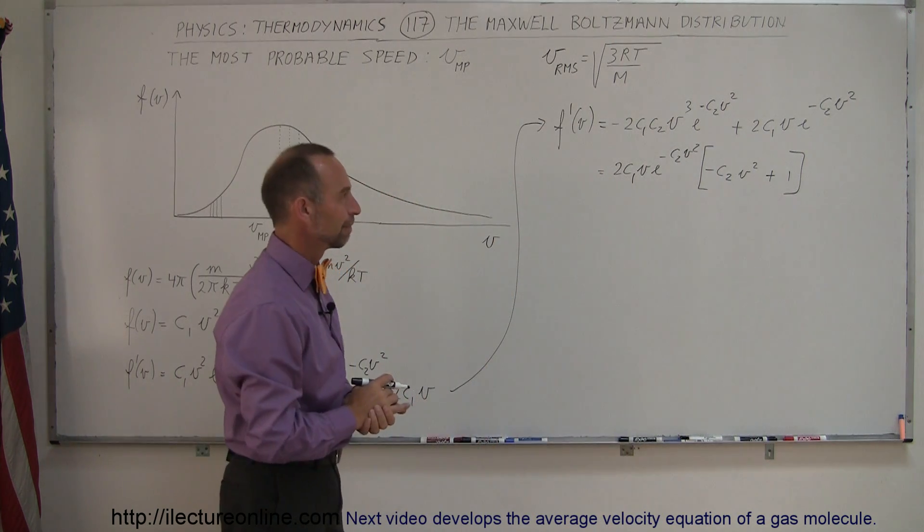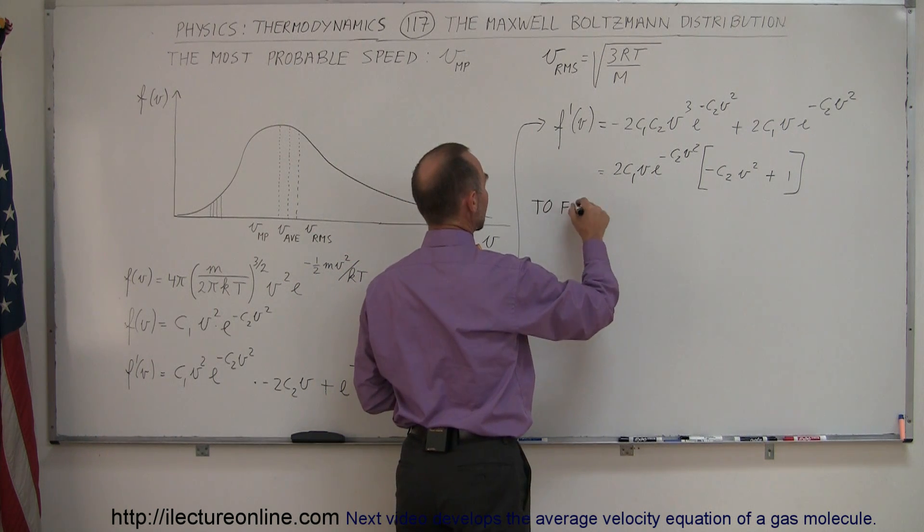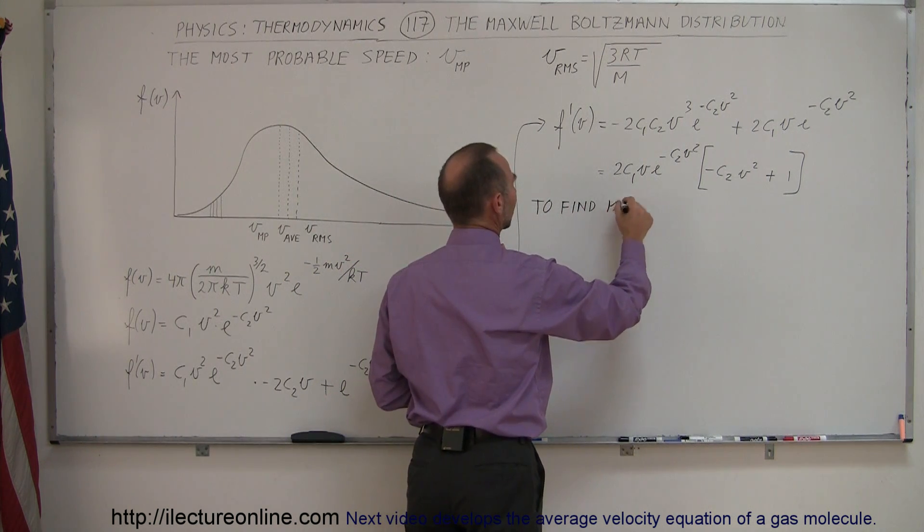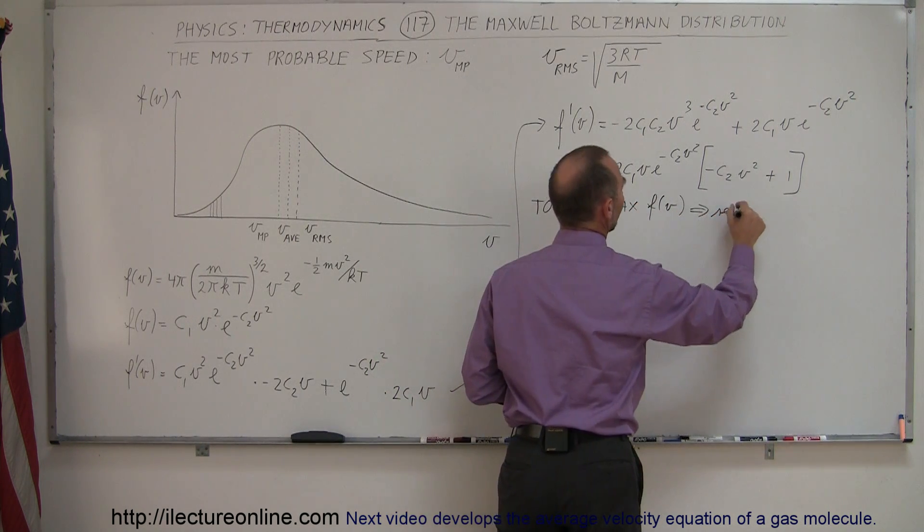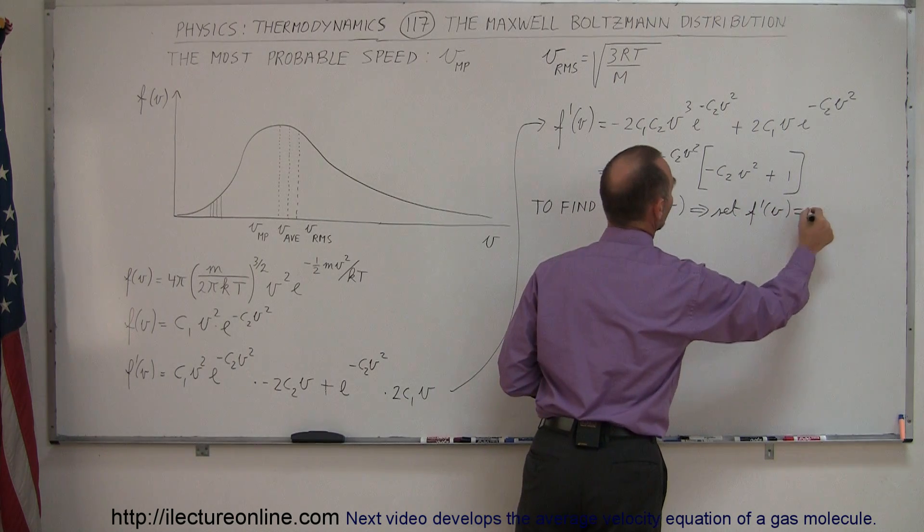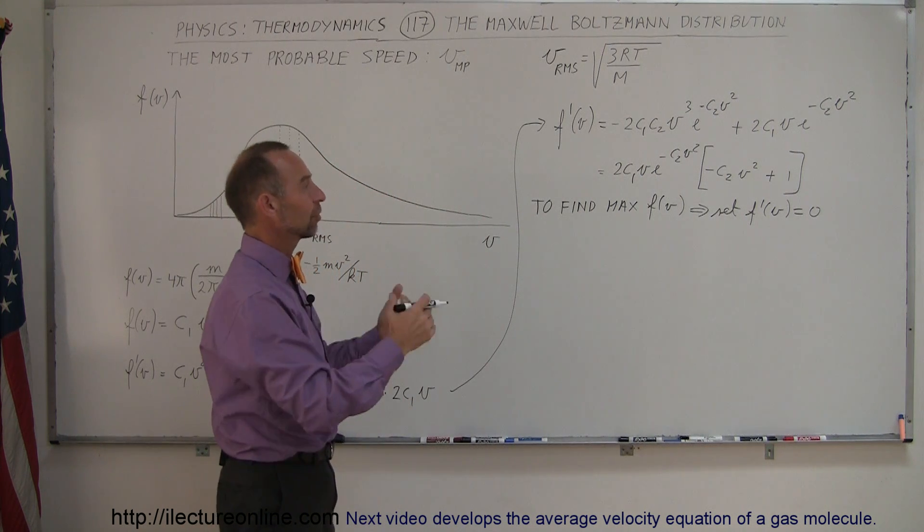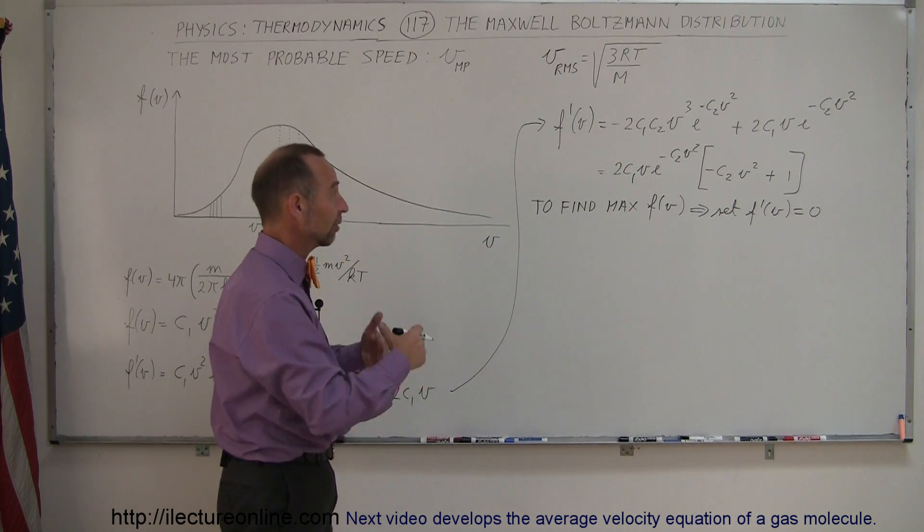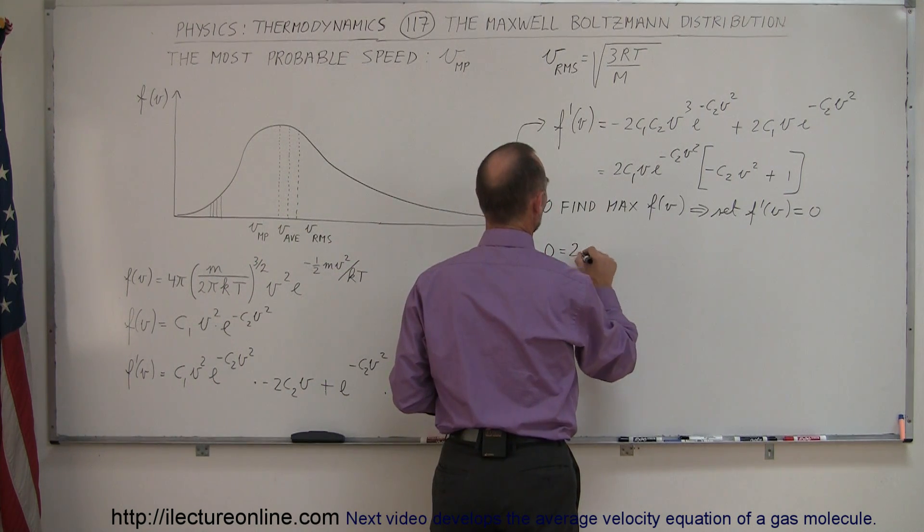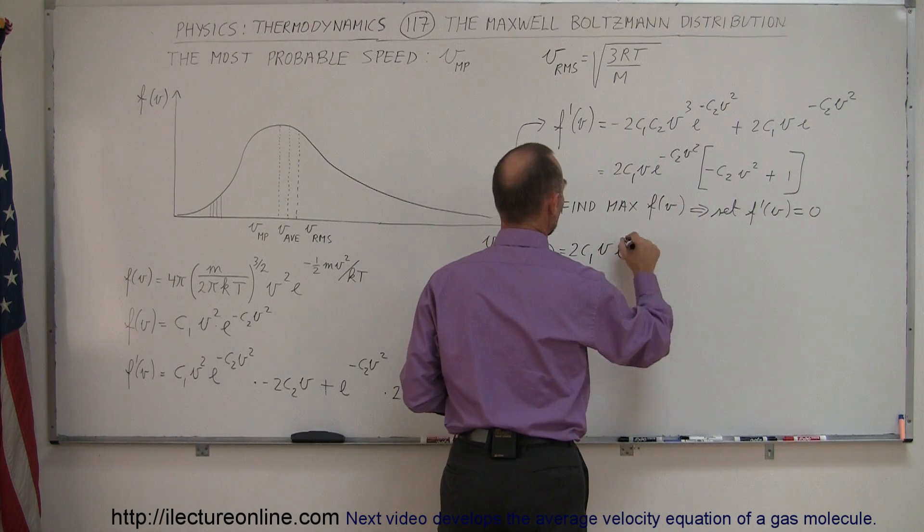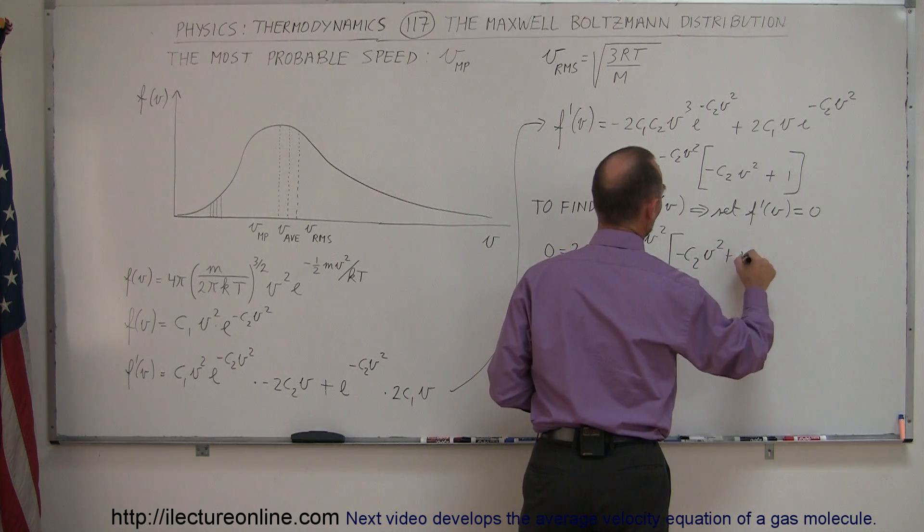Now to find the highest v, so to find max v, or to find a max function, I should say, max function of v, we set f prime of v equal to zero. That's a common technique in calculus where, to find the highest or lowest point in a function, we simply take derivative, set it equal to zero and solve for the variable. So we're going to set this equal to zero. So zero is equal to 2c1v e to the minus c2v squared times the quantity minus c2v squared plus 1.